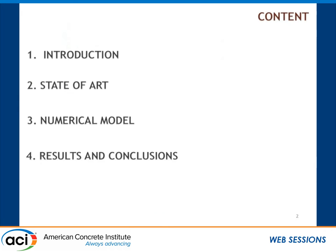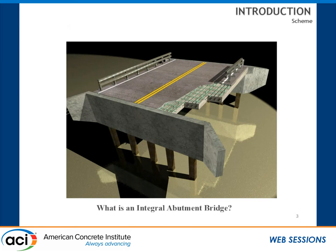So we need to start from some point to develop my research at Fuzhou University. My presentation is divided into four parts: an introduction and state of the art, numerical model, results, and conclusions. Let's start with a definition of what an integral abutment bridge is. An integral abutment bridge is a bridge with a monolithic connection from the superstructure into the substructure. Usually the substructure should be flexible enough to accommodate the horizontal displacement caused by the expansion and contraction of the deck.